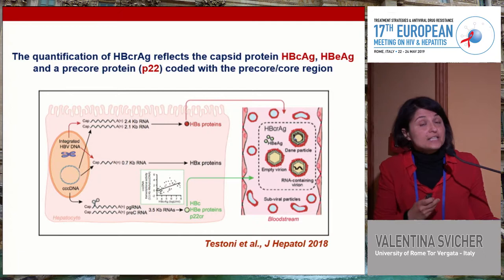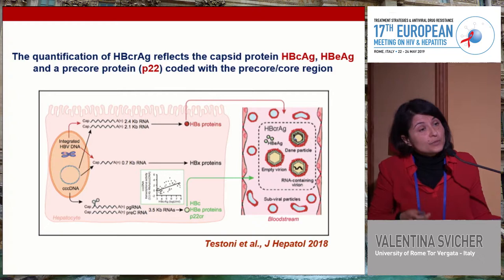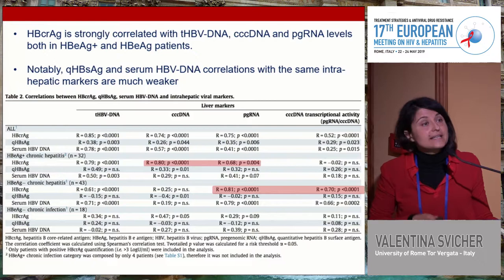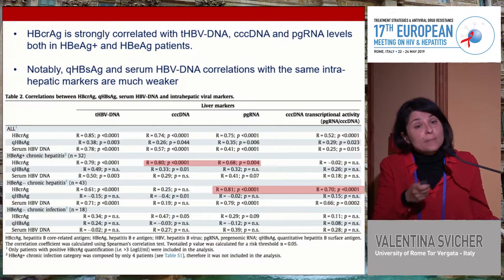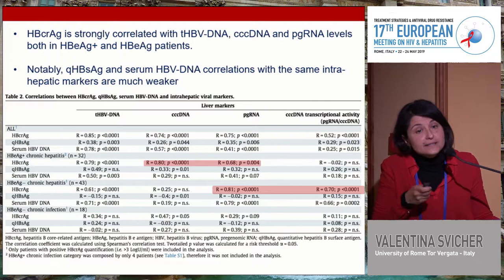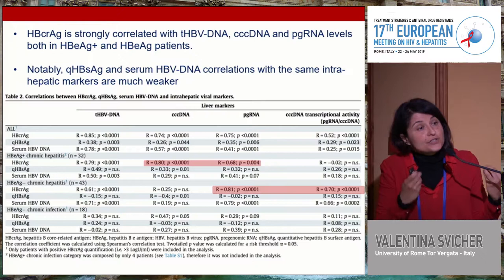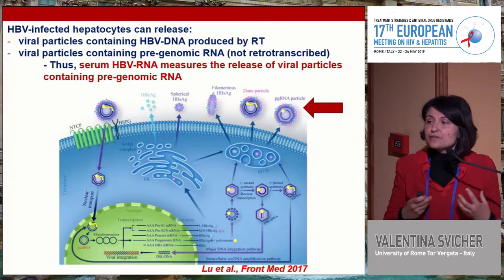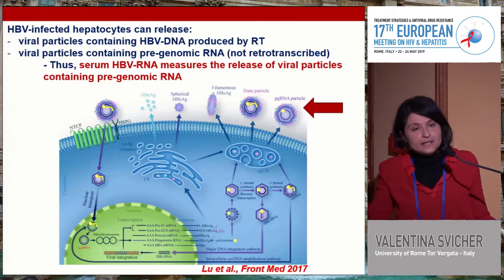These proteins are the capsid protein, HBeAg (in HBeAg-positive patients), and P22 — an aberrant protein present in naked variants. An elegant study by the group of Fabian Zoulim shows that core-related antigen correlates with the intra-hepatic amount of cccDNA, but most importantly — particularly in HBeAg-negative patients — correlates with pre-genomic RNA, suggesting this biomarker can reflect cccDNA transcriptional activity.